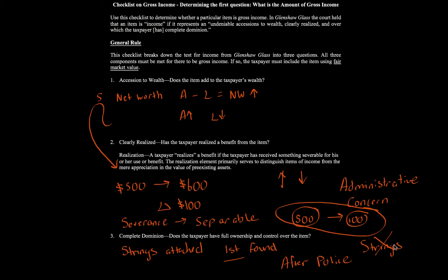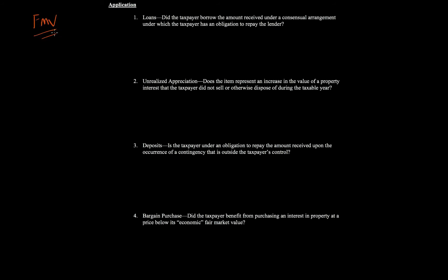It's important to note that a taxpayer must have all three: accession to wealth, realization, and complete dominion. If the taxpayer fails any of these three, the amount is not considered gross income. Also, whenever a taxpayer meets all three requirements, the fair market value of the item must be included. That's important because fair market value makes a distinction in some of these application examples.